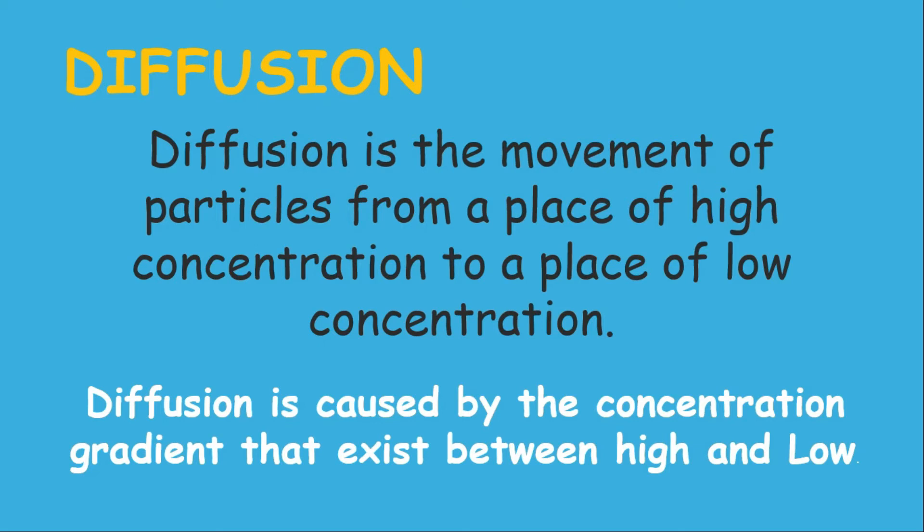Or think about cooking something really sumptuous — someone can smell it from next door. The high concentration would be where you are cooking, and the low concentration would be at the neighbor's premises. Diffusion is the movement of particles from a place of high concentration to a place of low concentration, along a concentration gradient, from high to low.